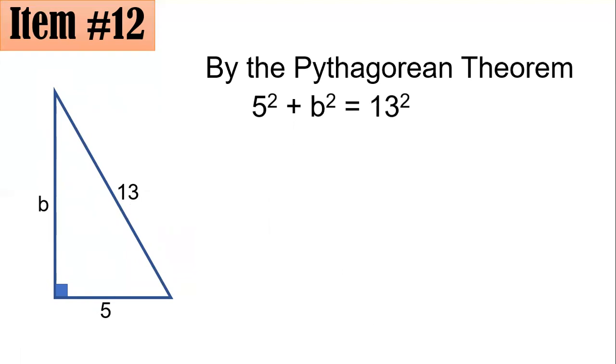By the Pythagorean theorem, the sum of the squares of the two legs, that's 5 squared plus b squared is equal to the square of your hypotenuse equals 13 squared. 5 squared is 25 and 13 squared is 169. So you have 25 plus b squared equals 169. And subtracting both sides by 25 gives you b squared equals 144.